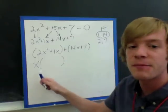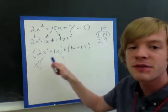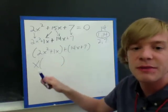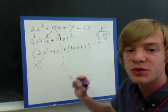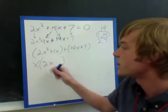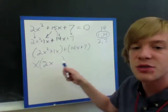So I put my x out front, and I divide both of these previous terms by x. So x squared divided by x is x, so I now have 2x. And 1x divided by x is just 1.